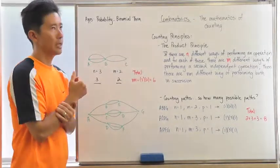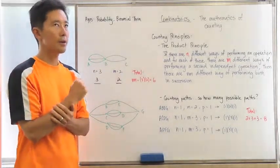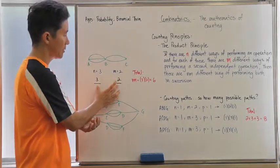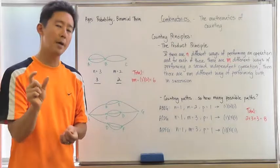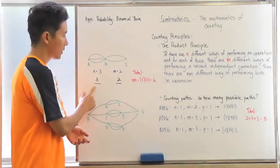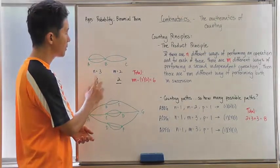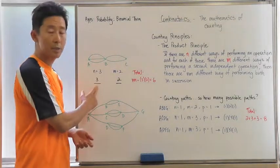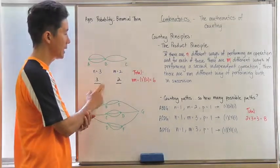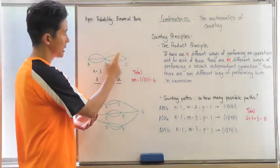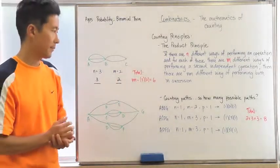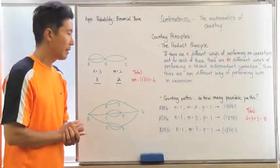Another way to keep track of these counting principles is using this underline technique — just underline to track what the operations are. This first operation has three different possible ways of performing it, and this second operation has two; multiply those together and we again get six.